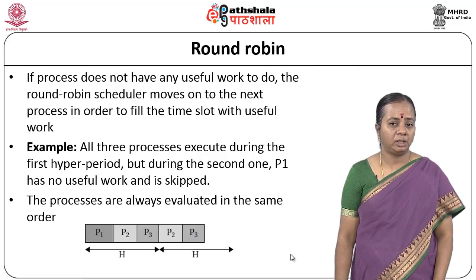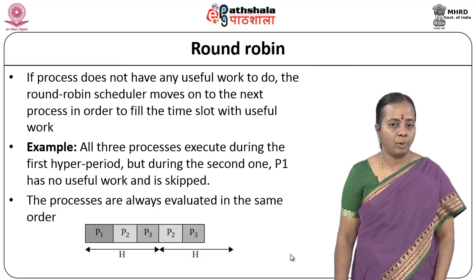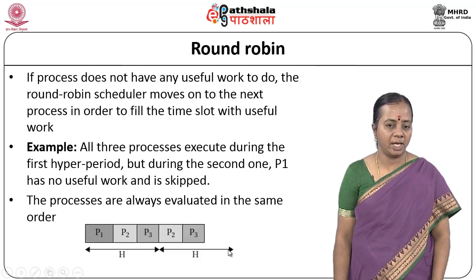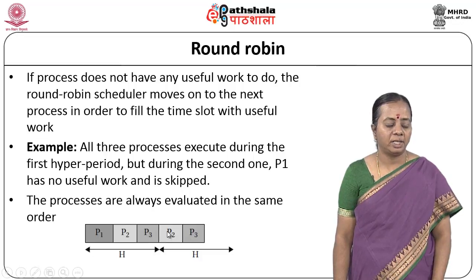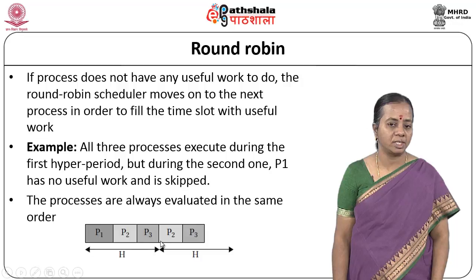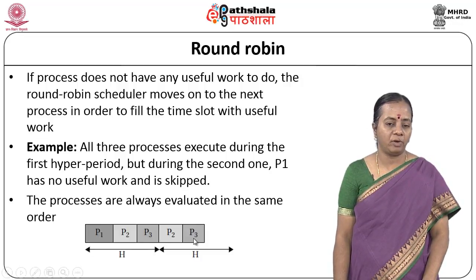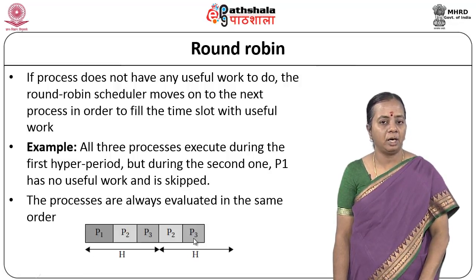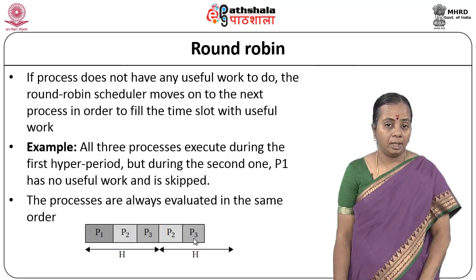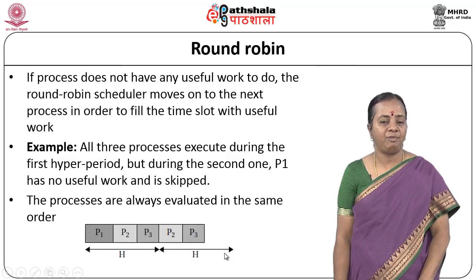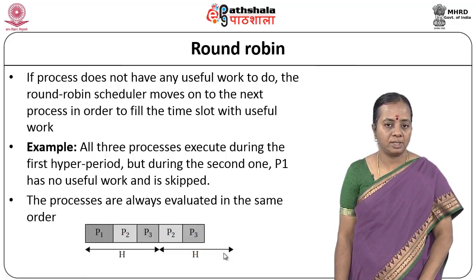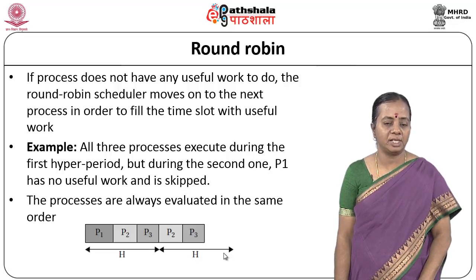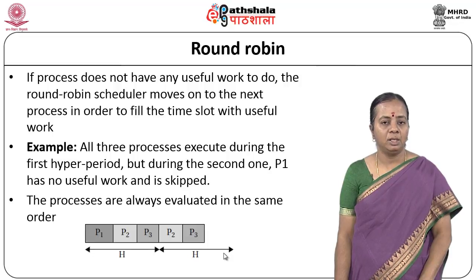Though we have reduced the wastage compared to TDMA equal scheduling, there is still some wastage in round robin. However, tasks 1, 2, and 3 are not waiting for their originally assigned time slots — they will be scheduled in earlier time slots and finish work earlier. These are simple scheduling algorithms where equal time slots are assigned to processes, maintaining fairness. The scheduler does this work with very less complexity.